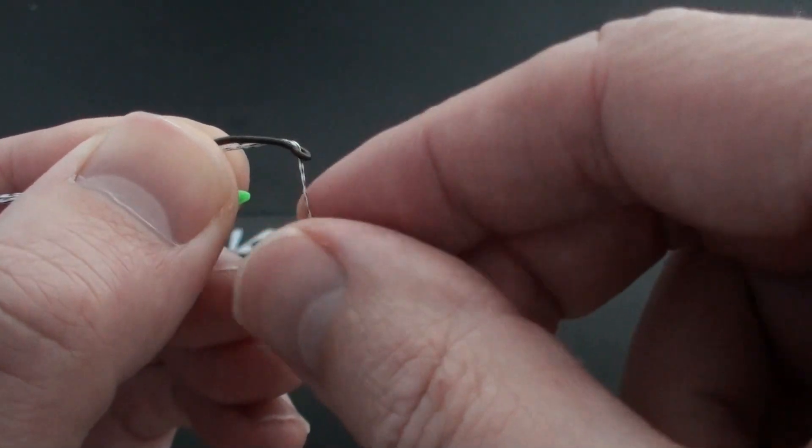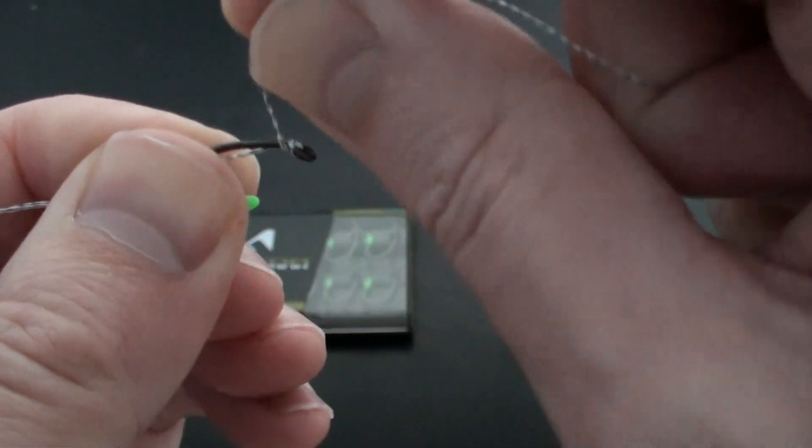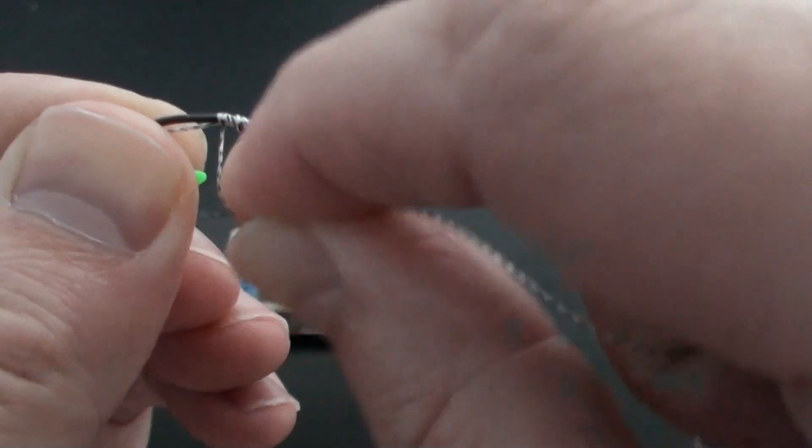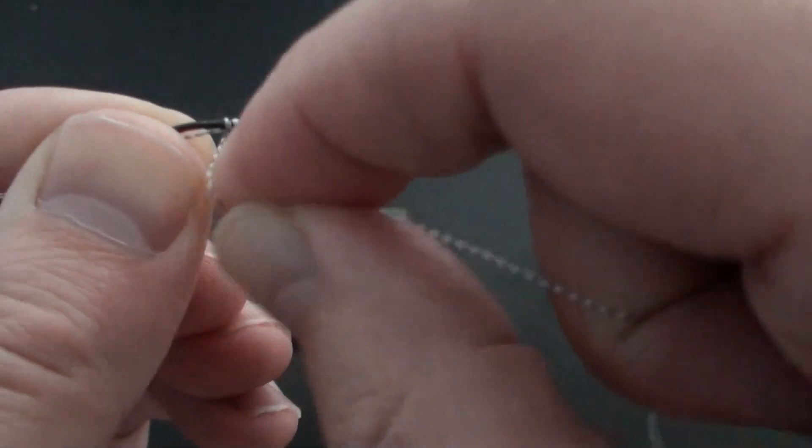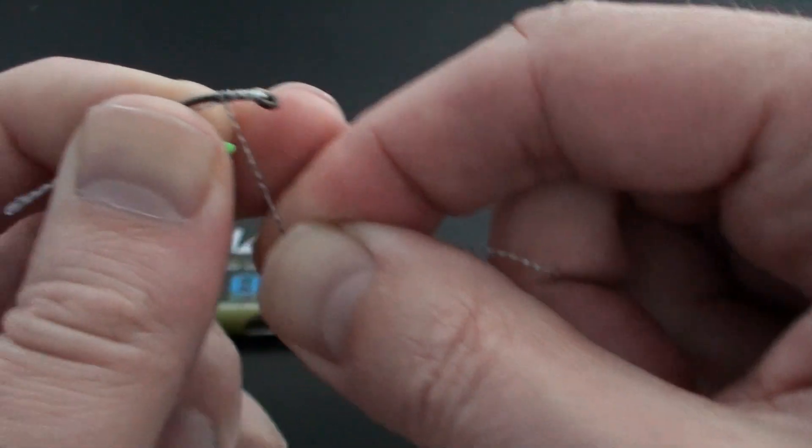Then all we need to do is grip the bend of the hook and start whipping the hook length material around the hook, like so, working our way downwards. Keep the whipping nice and tight. Probably going to need to do it about 6 or 7 times. There we go nice and tight.